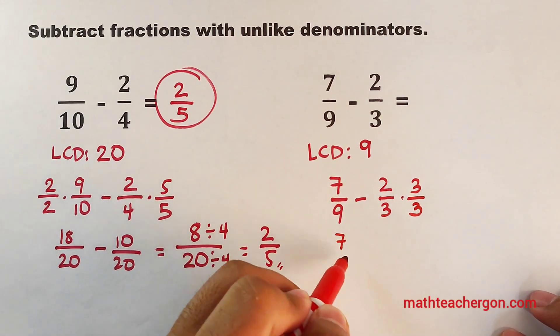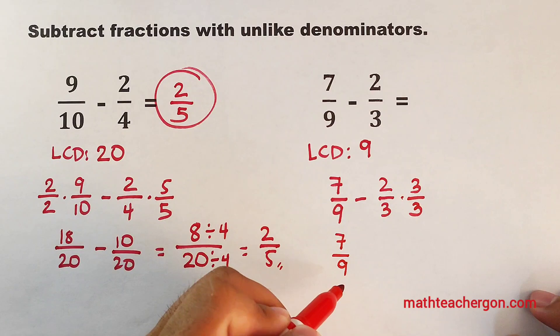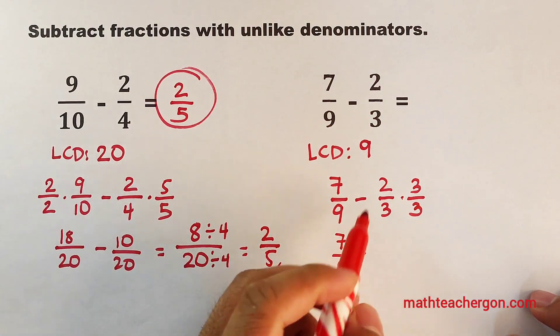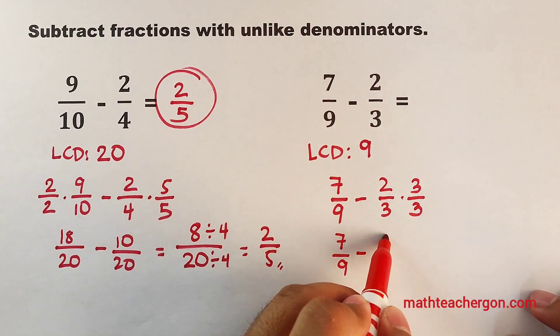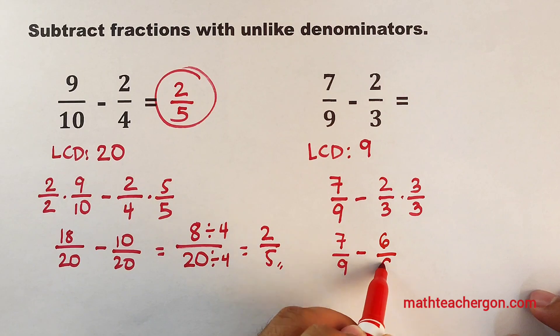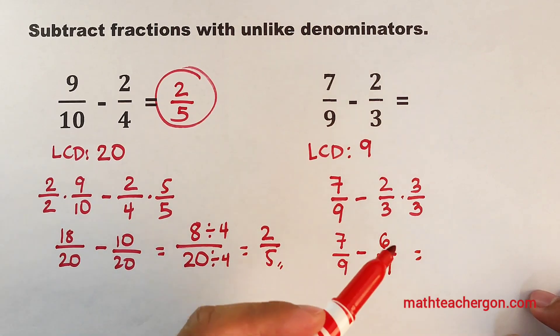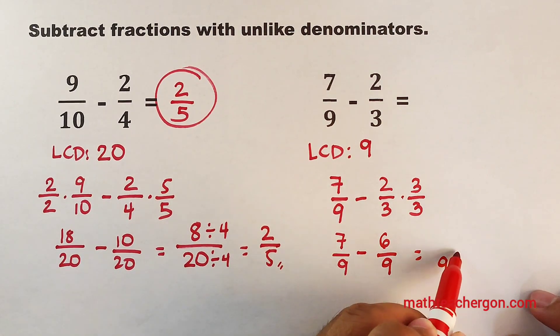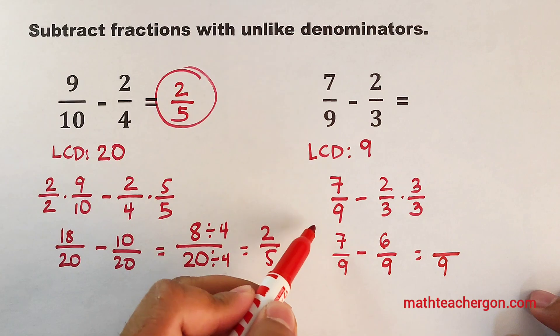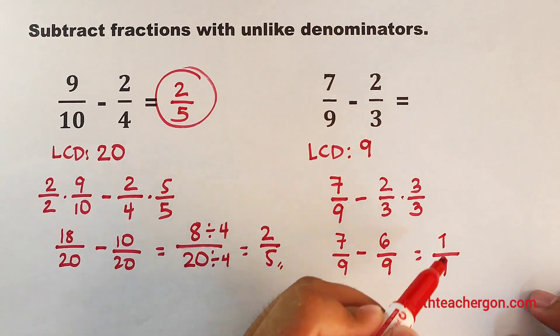So, we will copy 7 over 9, then this is minus 2 times 3, which is equal to 6 over 9. So, in this case, copy your denominator, which is common, then 7 minus 6, which is equal to 1.